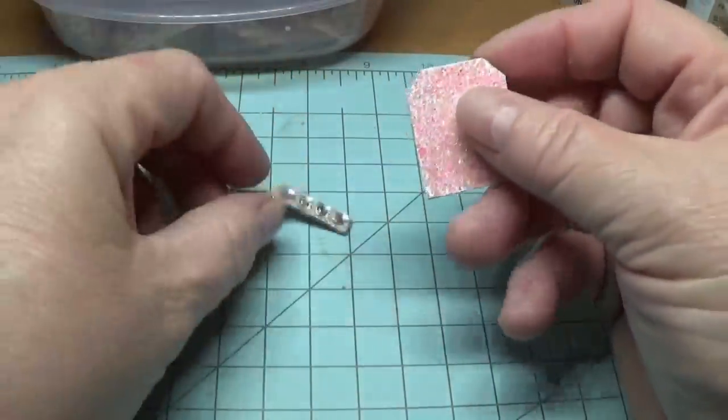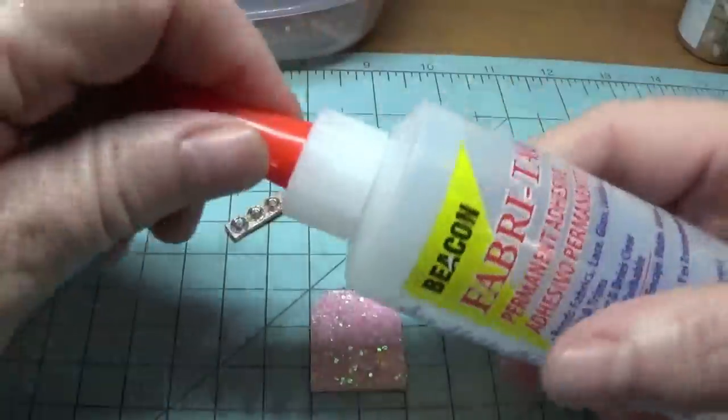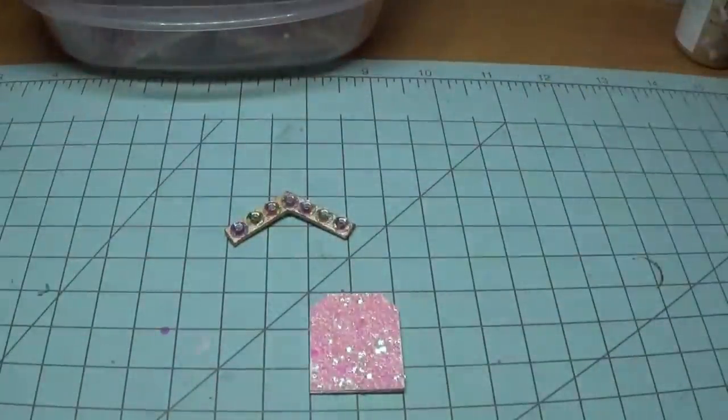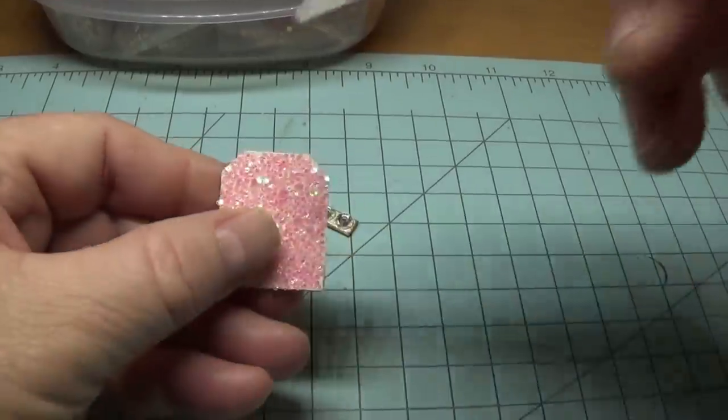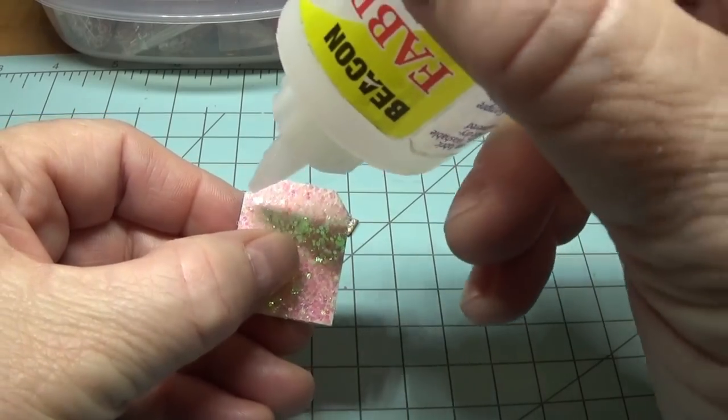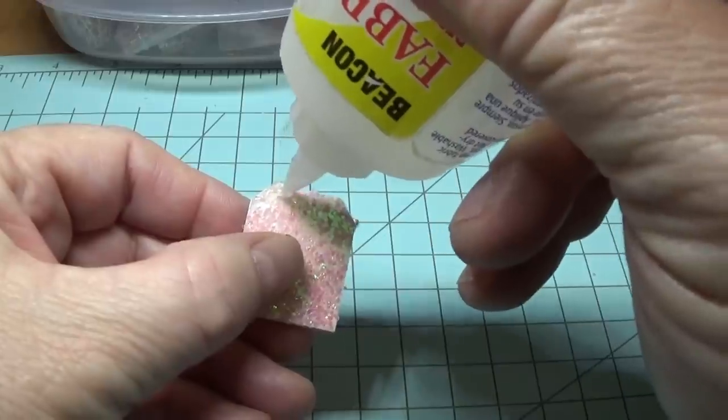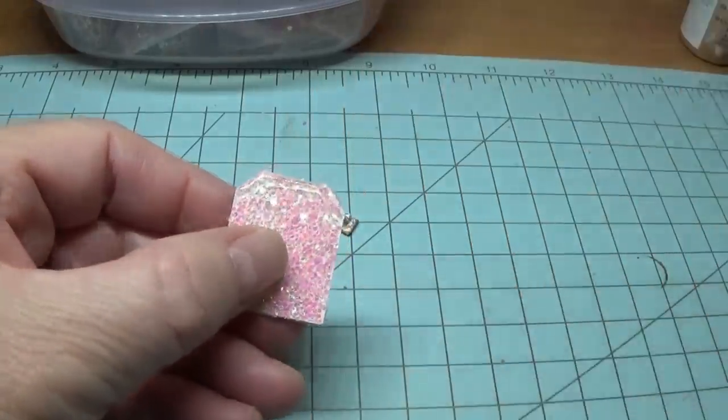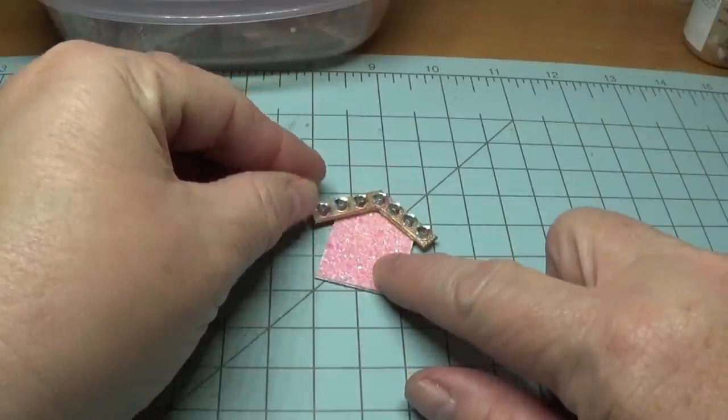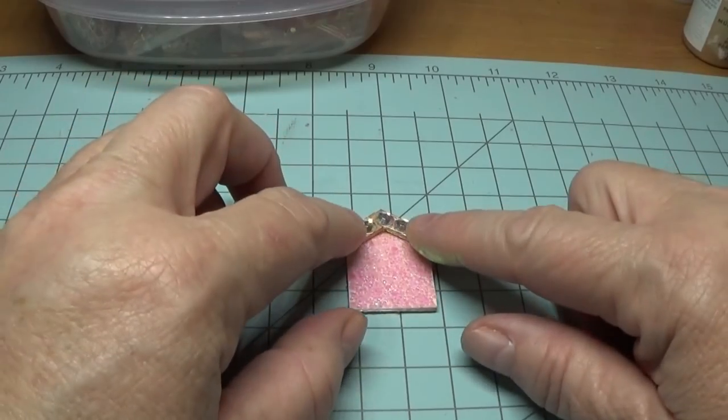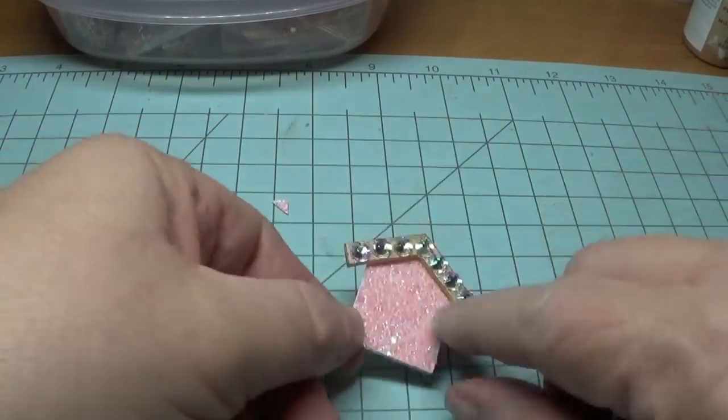I'm going to put a little bit of Fabri-Tac here, across here, and right here. I'm going to shake this down. I'll be glad to open up my new bottle when I finish this. Put some here, here, and here. And this part you're going to allow to dry overnight. Make sure that you have it exactly where you want it.